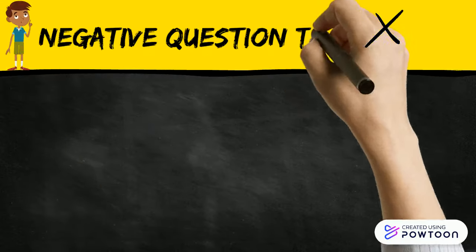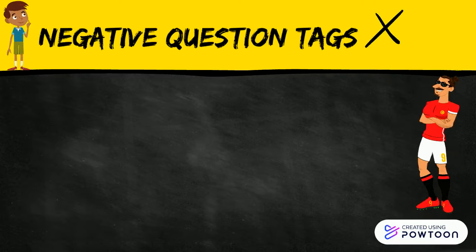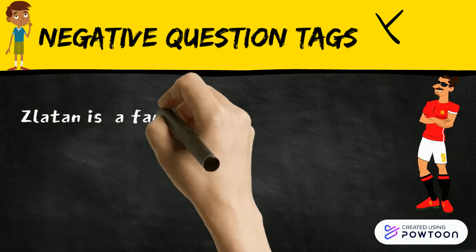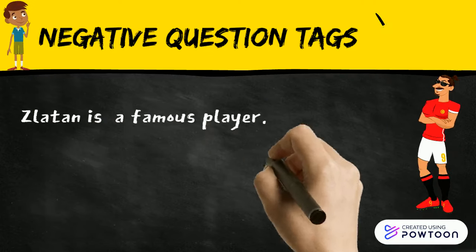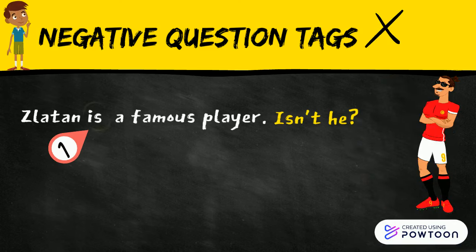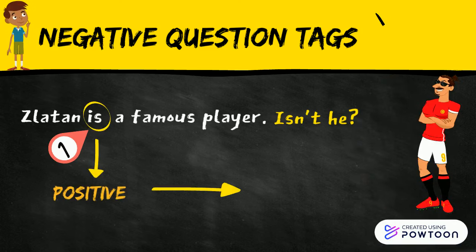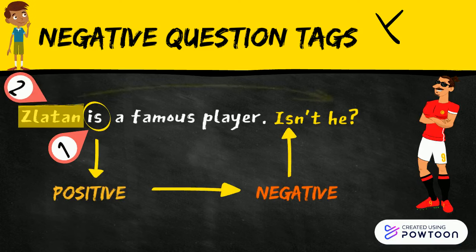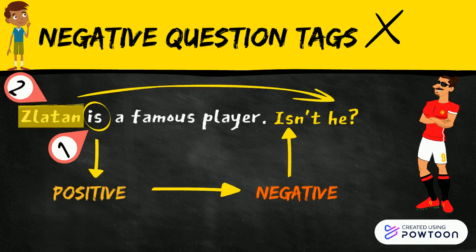First, when the statement is positive, you make a negative tag question. An example is: 'Zlatan is a famous player, isn't he?' We first change the verb form 'is' from positive to negative — 'isn't' — and then we add the subject pronoun 'he'.